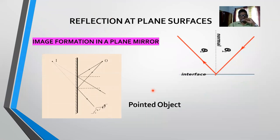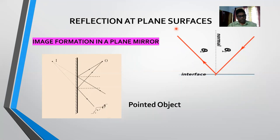We are considering reflection at plane surfaces, which we will discuss further in the next topic. Try to remember the laws of reflection: the incident ray, normal, and reflected ray all lie in the same plane, and the angle of incidence equals the angle of reflection. These are the laws of reflection. Thank you.